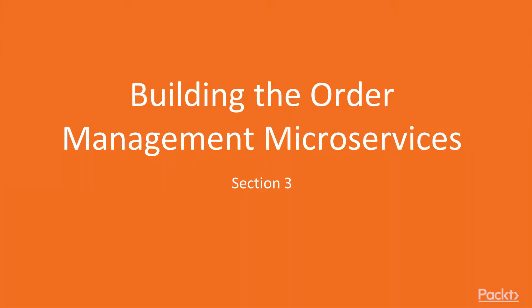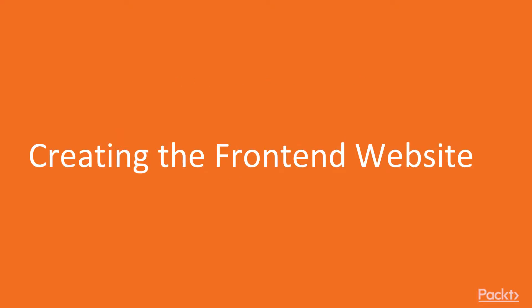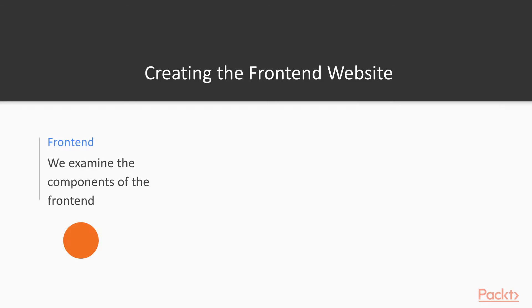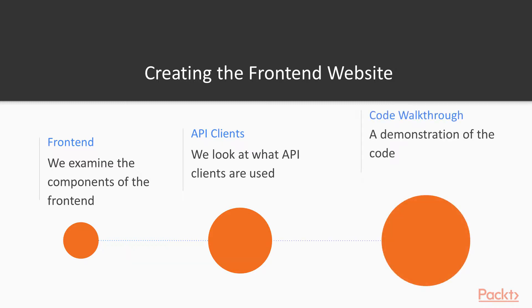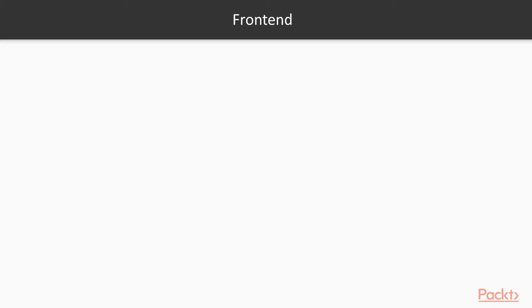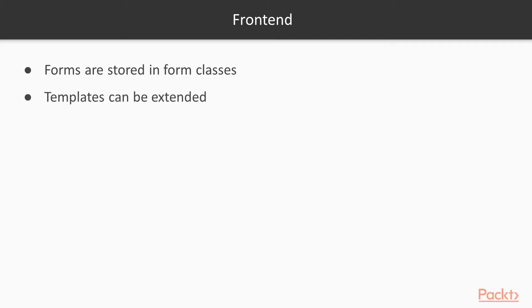In this video we're going to be examining the front-end and what components it requires. We're also going to be talking about the API clients and how they are used to communicate to the other microservices, followed by a code walkthrough. The front-end has forms stored in form classes, the templates can be extended, and the API clients handle API requests to the microservices.